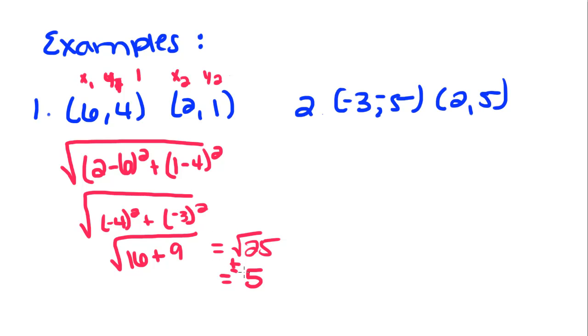Technically it equals plus or minus 5, but if you think about it, you can't have a negative distance. There can't be a negative distance between this point and this point. So we kick out that negative answer and only take the positive one.